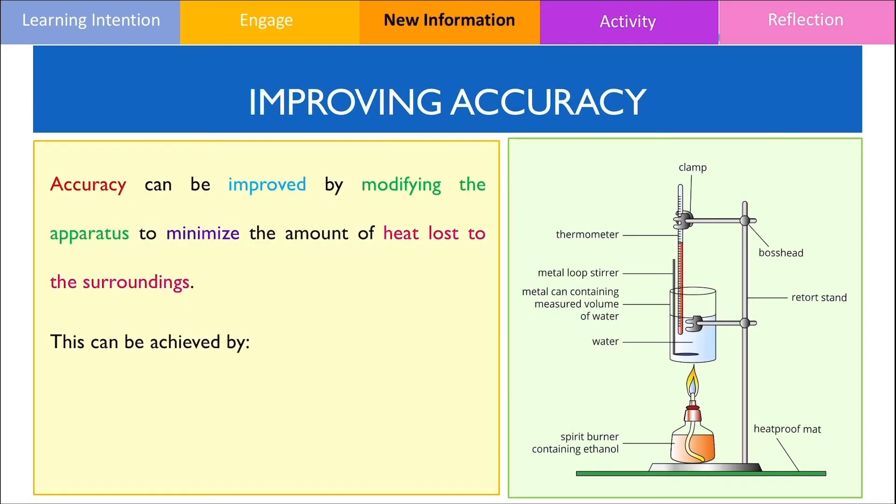In the last section of this video, I would like to discuss ways to improve the accuracy of measurements for the heat of combustion. The accuracy can be improved by modifying the apparatus in a certain way such that we minimize the amount of heat lost to the surroundings. One of the ways that we could do this is by adding an insulating lid that closes and prevents any heat that's escaping from the system and this can be further improved by insulating the sides of the calorimeter.